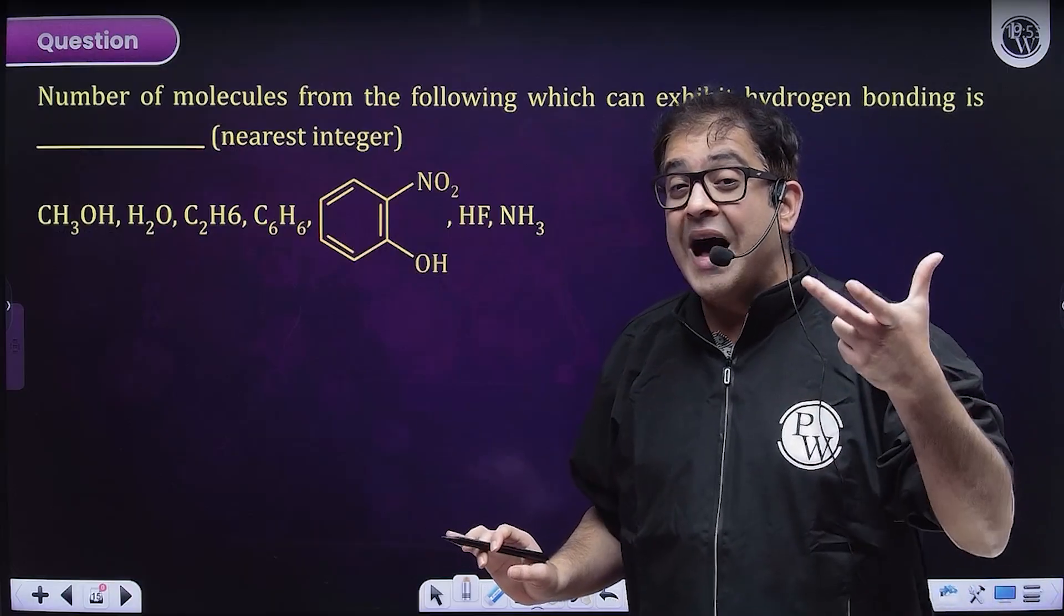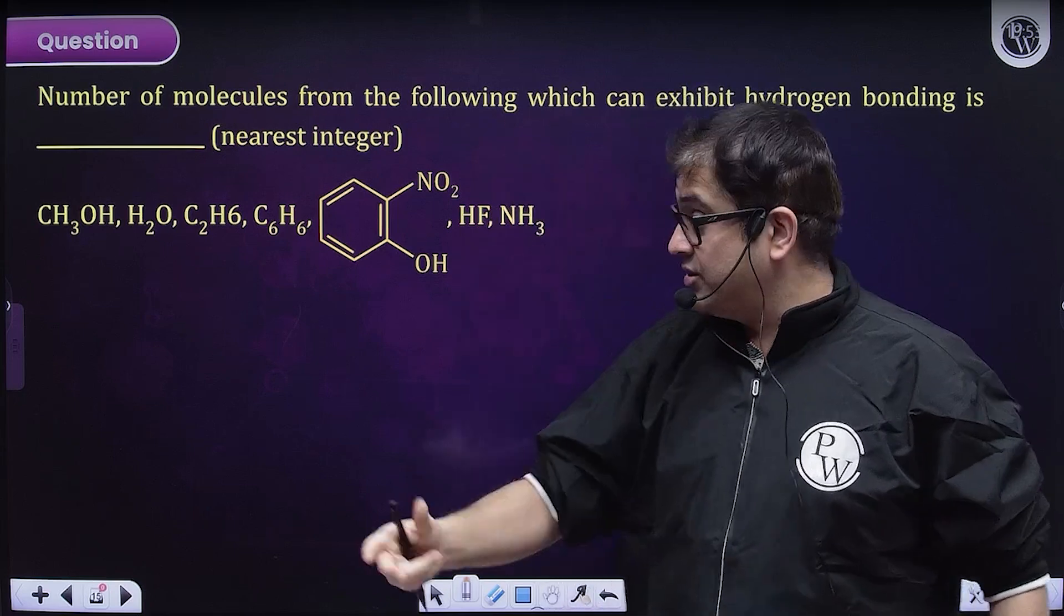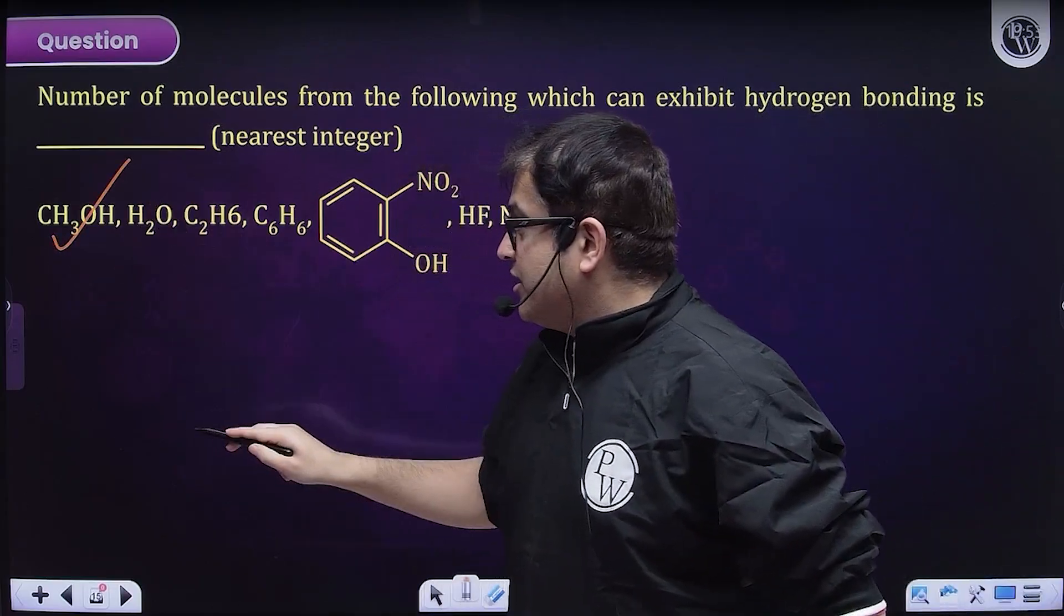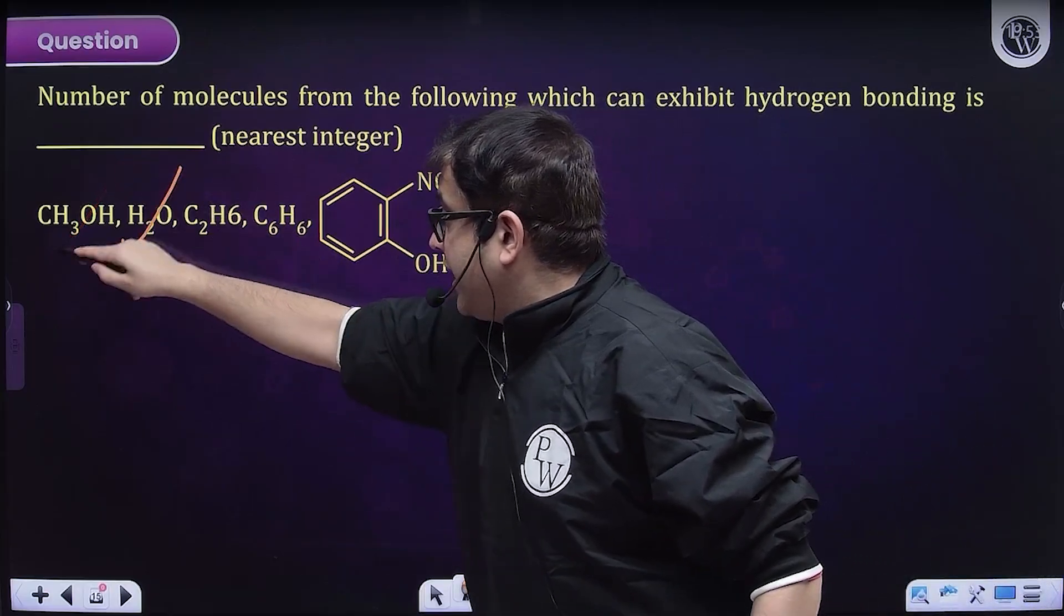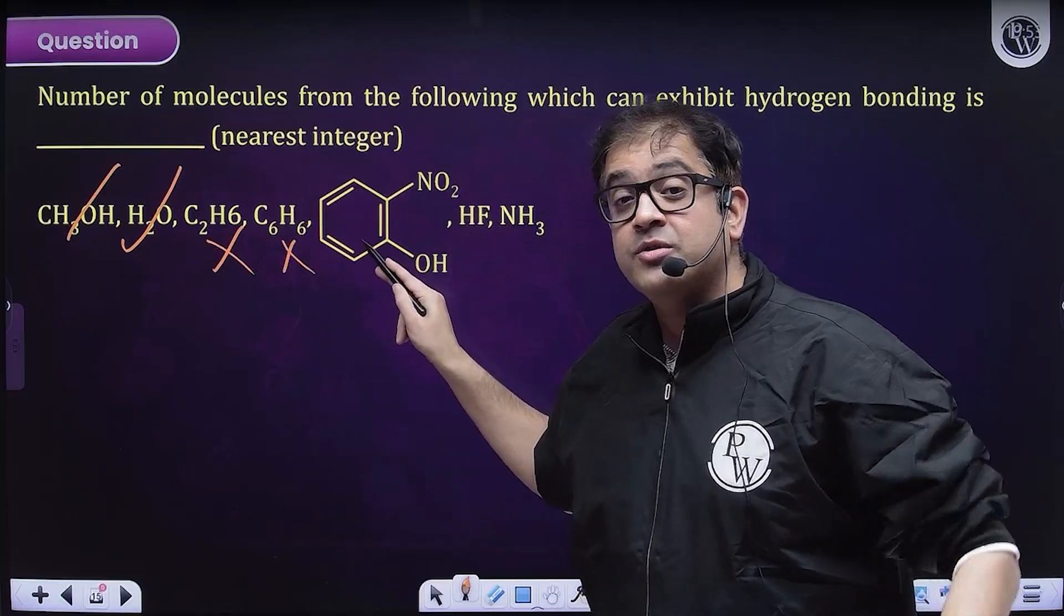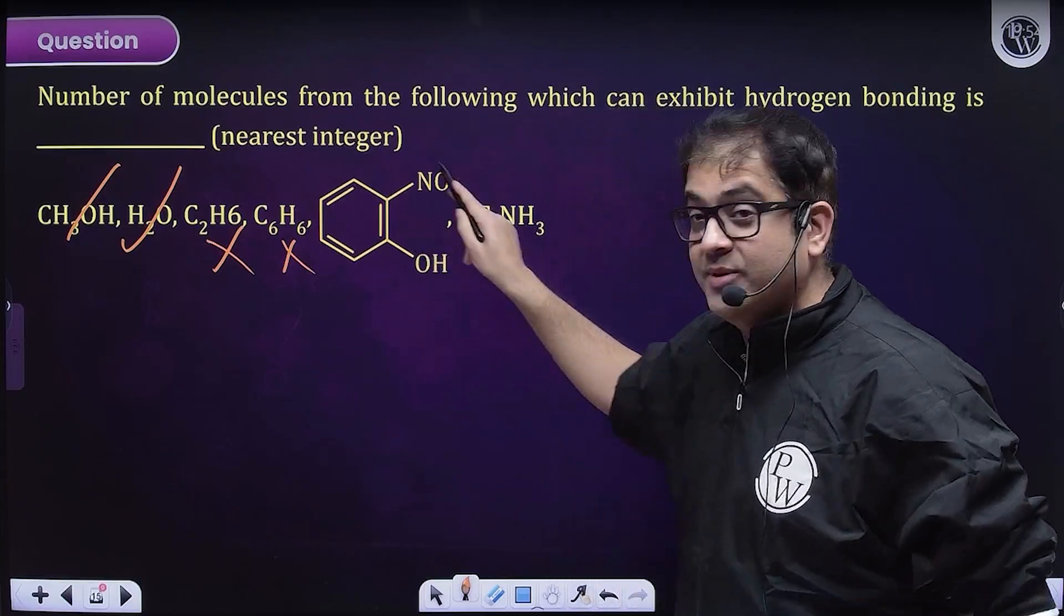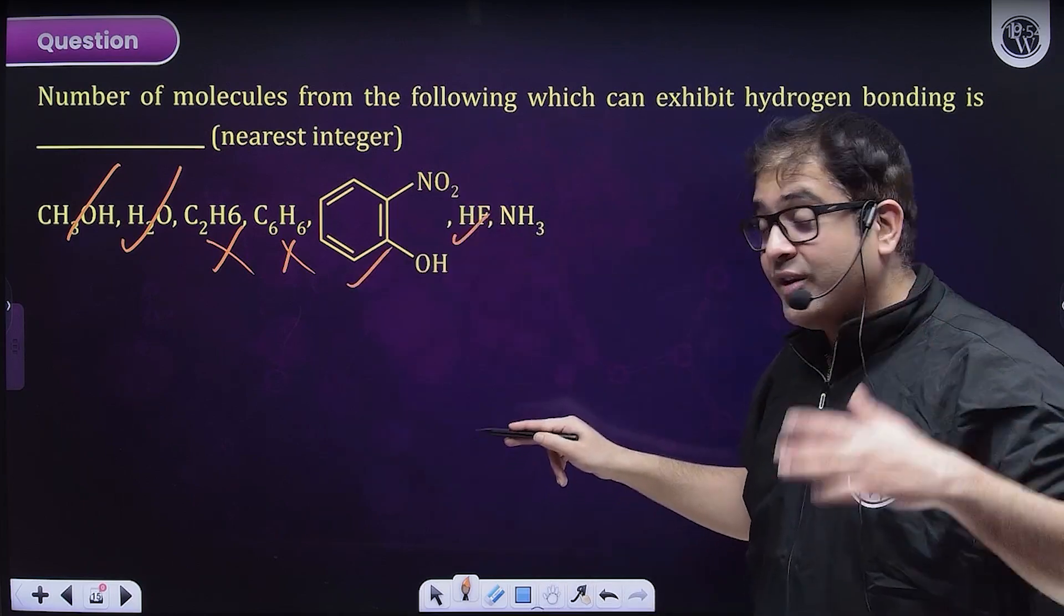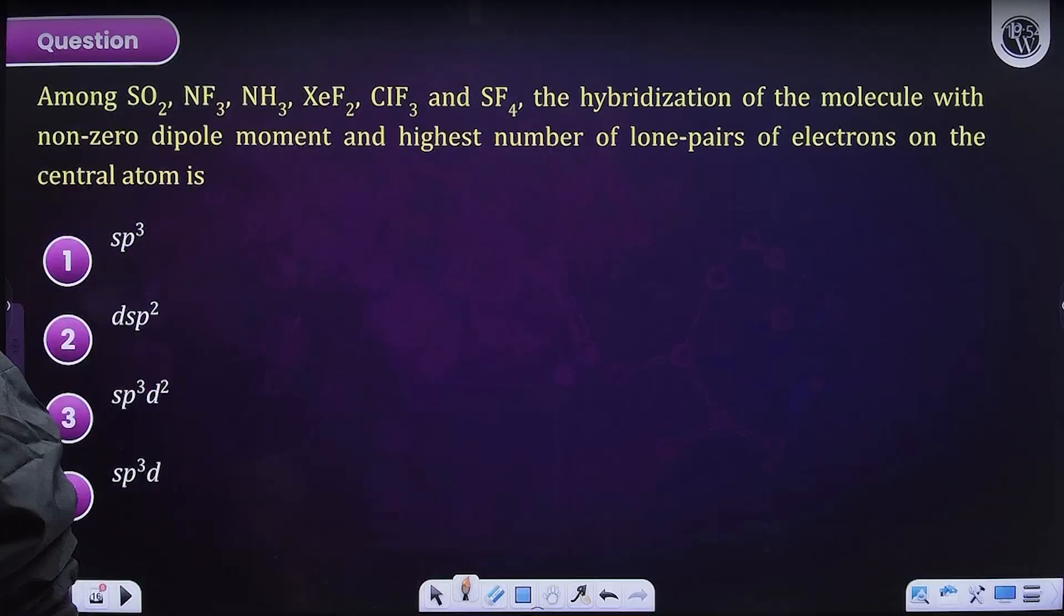Talking about hydrogen bonding, who has the capacity to have strong hydrogen bonds? O bond H, N bond H, and F bond H. Let us check which of these molecules have hydrogen bonding between them. Water has O bond H, so this will have hydrogen bonding. Benzene is non-polar hydrocarbon. This will also have intramolecular hydrogen bonding because ortho isomers can form cyclic chains. HF also can do hydrogen bonding. NH3 can also do hydrogen bonding. Our answer will be 5.